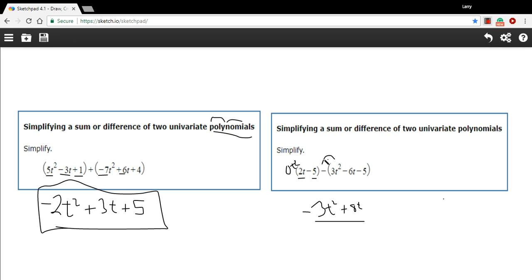The other way to do this is just to simply distribute the negative sign and turn this into an addition problem. Some people find that easier. So let me just rewrite it that way.